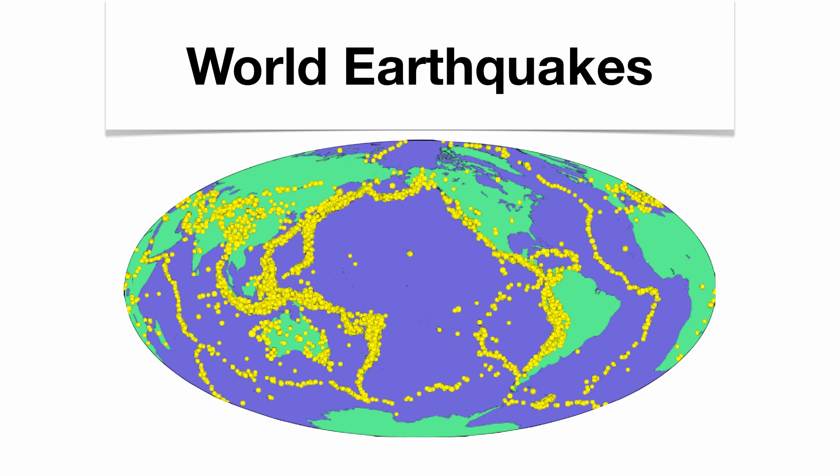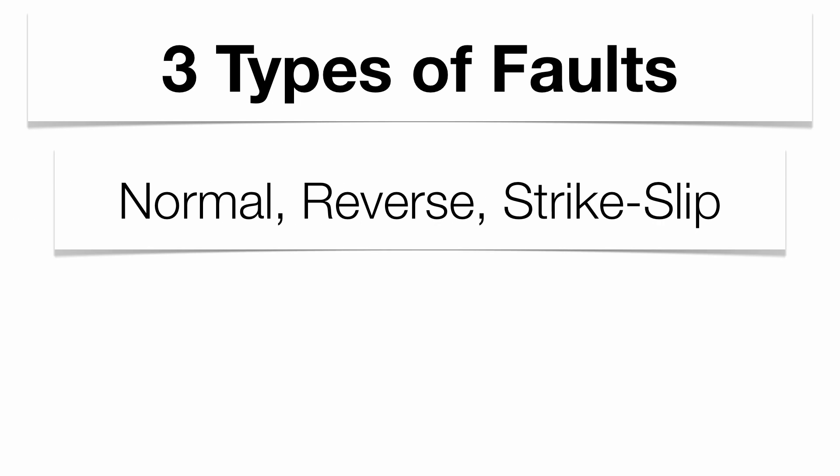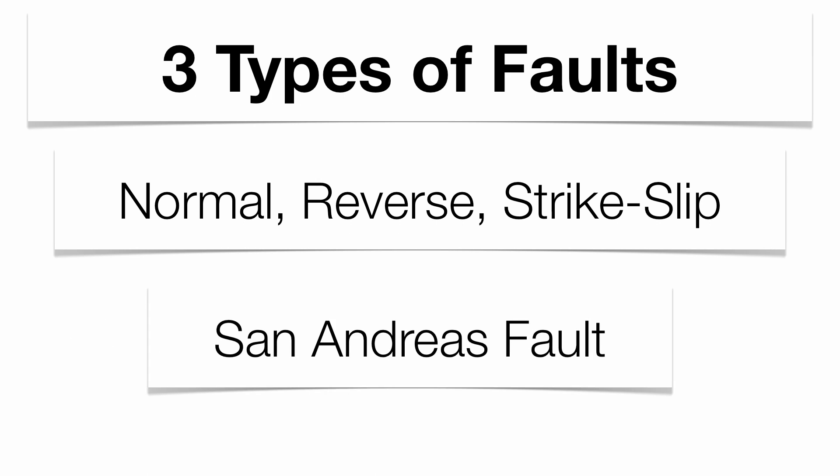Your world earthquakes are going to occur along those plate boundaries, and usually along those plate boundaries you'll get what are called fault lines. The three basic types of faults: you have normal, reverse, and strike slip. Strike slip is probably going to be the most important one, because that is the San Andreas fault, located in our own country in California. The San Andreas fault, out of those three types of faults, is a strike slip fault found out in California.